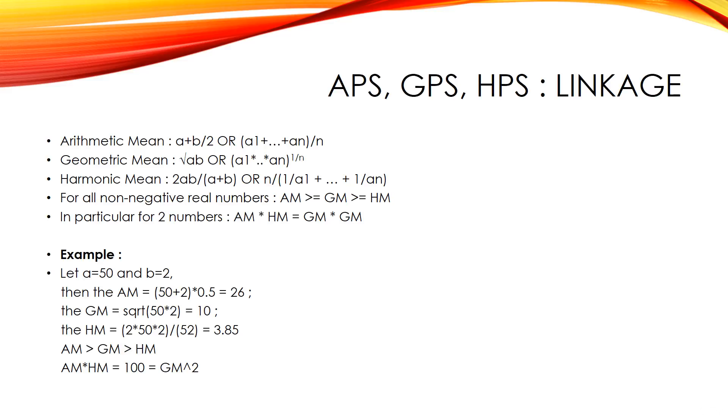In particular, for two numbers, AM into HM equals GM into GM. For example, let a equals 50 and b equals 2. Then the AM equals 50 plus 2 into 0.5 equals 26. GM equals square root of 50 into 2 equals 10. The HM equals 2 into 50 into 2 by 52 equals 3.85. AM greater than GM greater than HM. So, AM into HM equals 100 equals GM square.